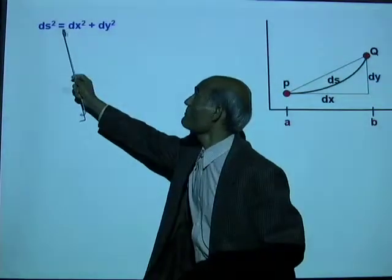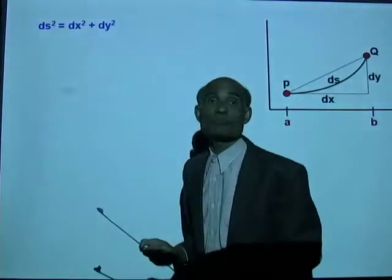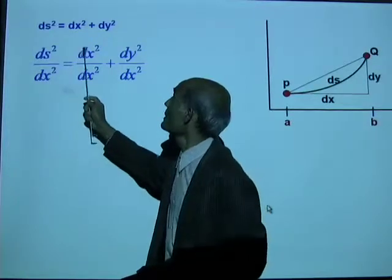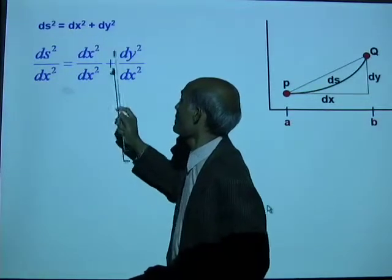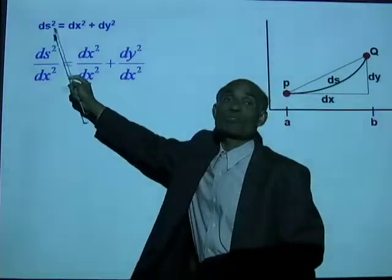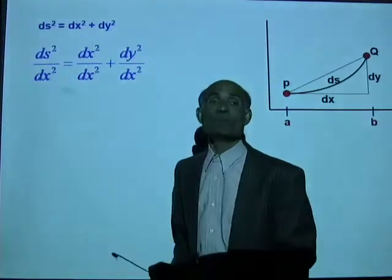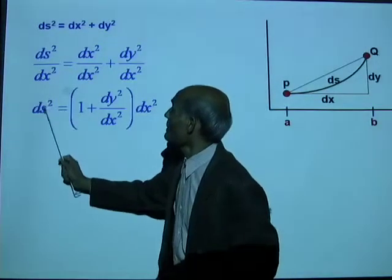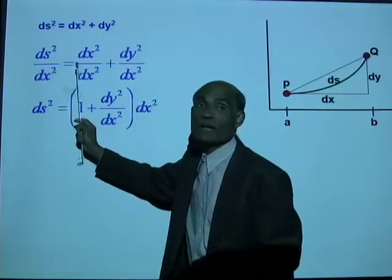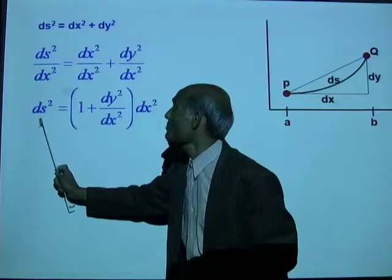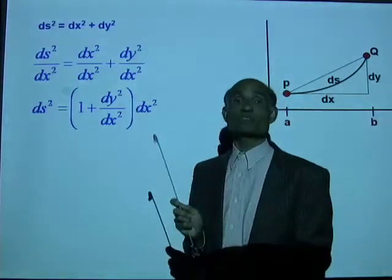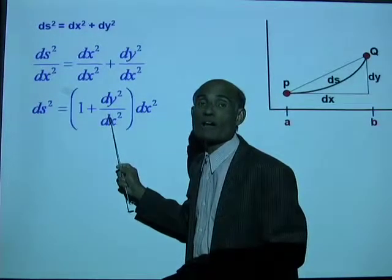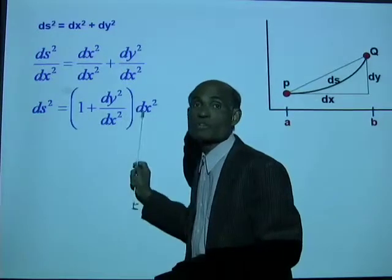Now let's divide both sides by dx². That gives: ds²/dx² = 1 + dy²/dx². Simplifying and multiplying every term by dx², we get ds² = (1 + dy²/dx²) · dx². This can be rewritten as ds² = (1 + (dy/dx)²) · dx².